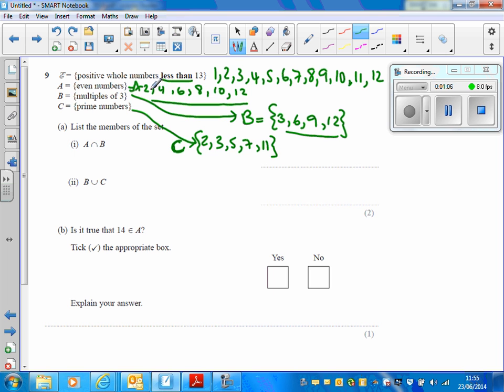And if we look at the numbers which are in these two sets, we can see that 6 is in both and also 12 is in both. So A intersection B is 6 and 12.